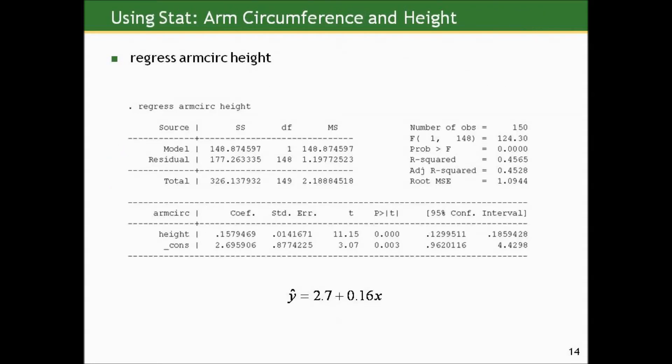Now, how do we do this in Stata? It's a straightforward thing, but you have to have your data in Stata. If you have your Y and X values entered in separate columns — each row representing one child, one column for arm circumference and another for height — then the linear regression command is the regress command. You type 'regress' followed by your outcome Y and your predictor X. I've called my Y variable 'arm_circ' and my X variable 'height', but you can call them whatever you want.